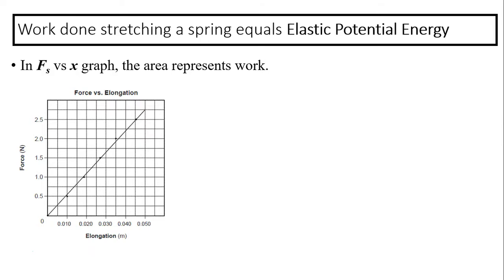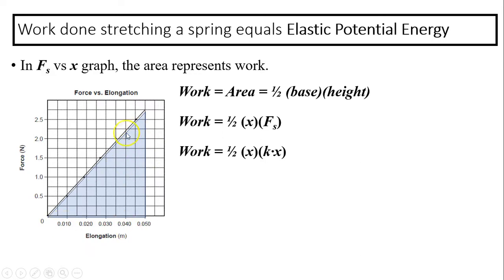Work done stretching a spring equals elastic potential energy. In a spring force versus x graph, the area represents work — just like any other force versus displacement graph. The area of the triangle is one half base times height. The base is elongation and the height is spring force, where spring force equals k times x. Work done stretching the spring equals energy gained, and the energy increased equals elastic potential energy.